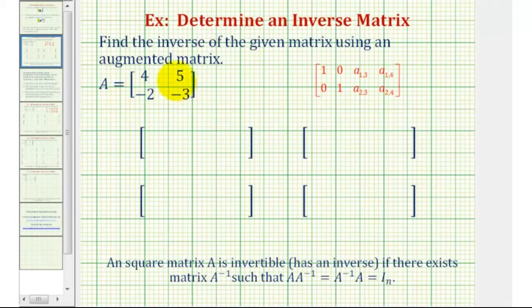So because we're given a 2 by 2 matrix, the augmented matrix will be a 2 by 4 matrix where the first two columns will come from matrix A. The third and fourth columns will come from a 2 by 2 identity matrix. So we'd have 1, 0, 0, 1.